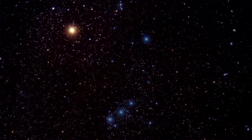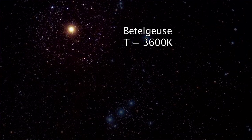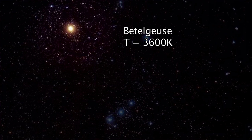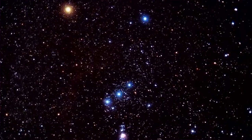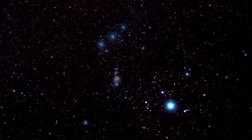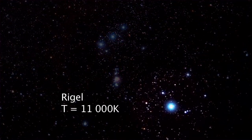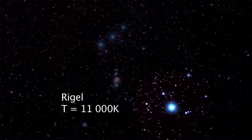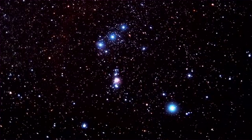Betelgeuse, much colder with 3,600 Kelvin, is clearly glowing orange in a winter sky in the northern hemisphere. Rigel, also from the Orion constellation, is blue instead, its temperature being around 11,000 Kelvin.